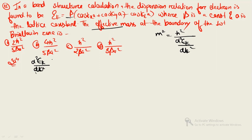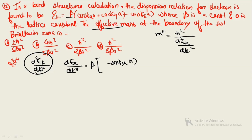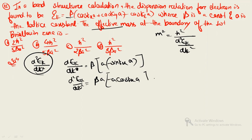Calculate d²ε_k / dk² step by step. First, dε_k/dk gives a term with beta and minus sin(kx·a). Differentiating again, d²ε_k / dk² gives beta·a² times cos(kx·a), with a negative sign. Evaluating at k = π/a: cos(π·a/a) = cos(π) = −1 (since cos(nπ) = (−1)^n), so d²ε_k / dkx² equals beta·a².